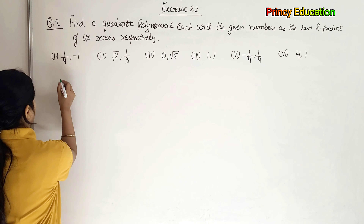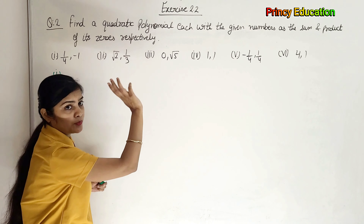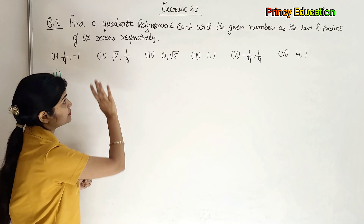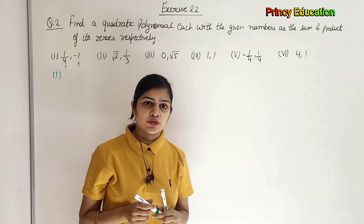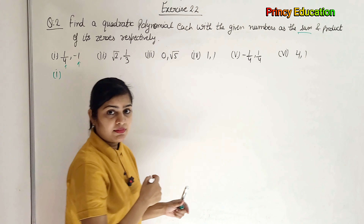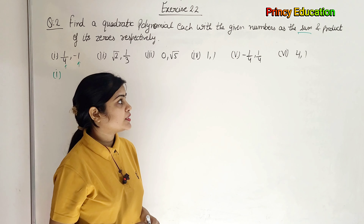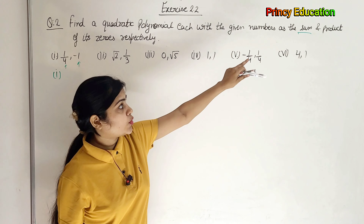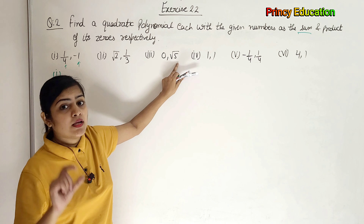First, let's take part 1. The values given are 1/4 and minus 1. What is 1/4 and minus 1? Let's look at the equation — quadratic polynomial, each with the given numbers as sum and product of its zeroes respectively. So what you have given is sum of zeroes and product of zeroes respectively. If you have seen my previous questions, I have told you the basic concept. The first value is sum of zeroes. You need to know the basic concepts.